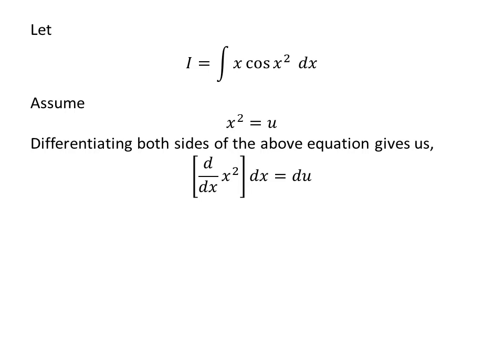Taking differential of both sides gives us derivative of square of x times differential of x is equal to differential of u.